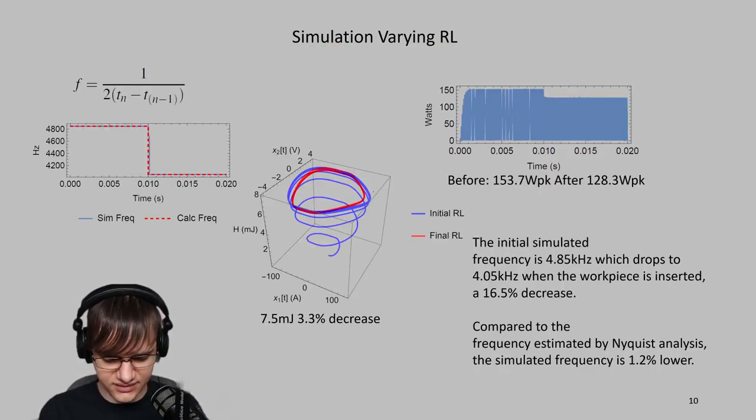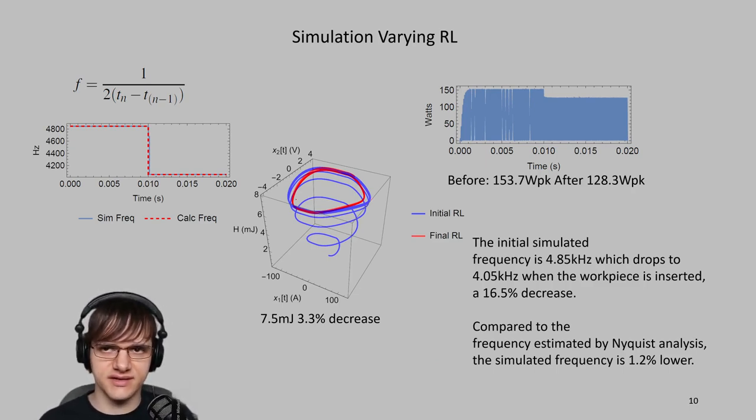Looking at the Hamiltonian, you can see that it's pretty flat on top, meaning that it's at a very good resonant point.